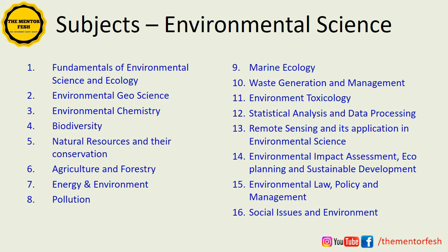And the sixteenth will be social issues and environment. So in total, there will be sixteen subjects that I am going to cover. It will be divided into two parts — first I will cover serial numbers one to eight, and during the second phase, I will cover serial numbers nine to sixteen. These can be referred to as either Group A or Group B, or Part One or Part Two.